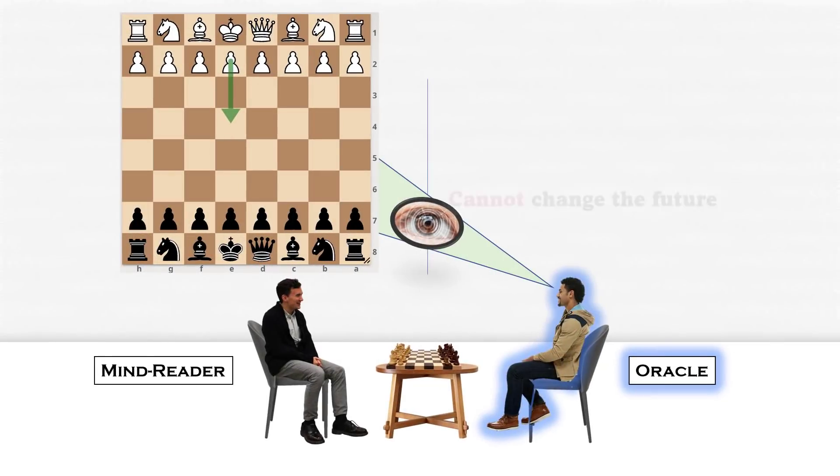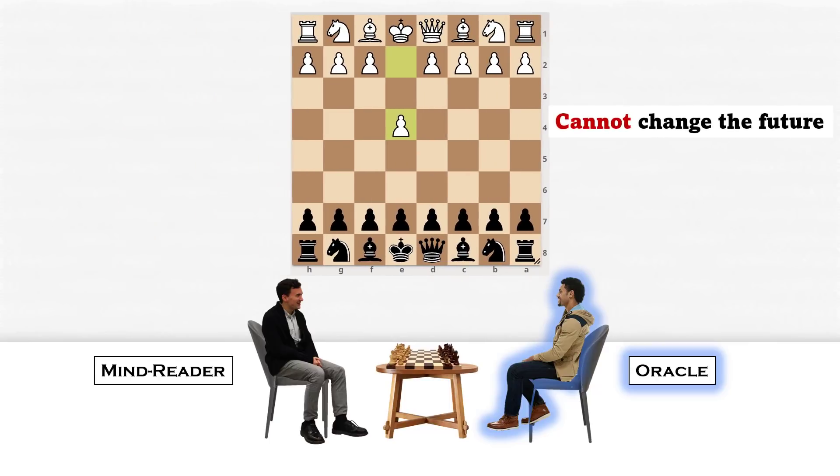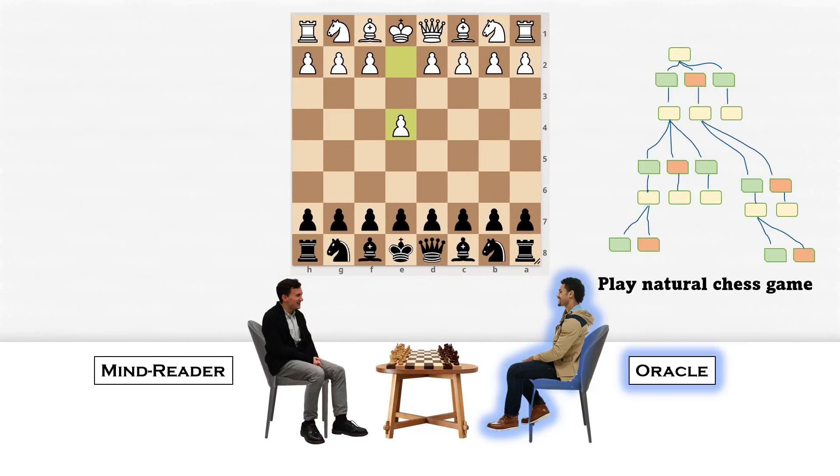Also, he can only see the future, but he cannot change the future. So for instance, if he sees that his opponent is going to play E4, he cannot change it. Because that's the future, otherwise it will invalidate the whole concept of seeing the future. So as per this example, the move E4 will appear on the board.